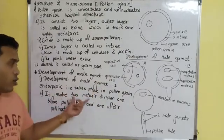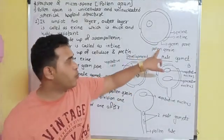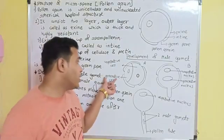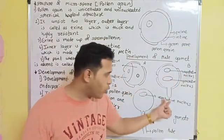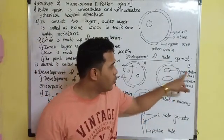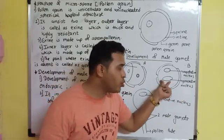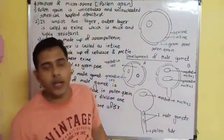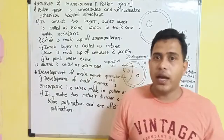So: development of male gamete is endosporic, taking place inside the pollen grain. It involves two mitoses — the first before pollination, forming a vegetative cell and a generative cell. After pollination, the vegetative cell forms the pollen tube, and the generative nucleus undergoes mitosis to produce two non-motile male gametes.